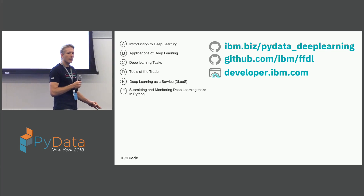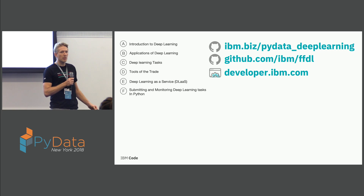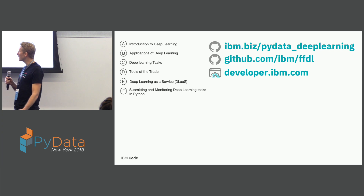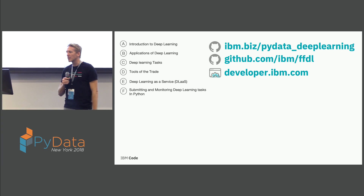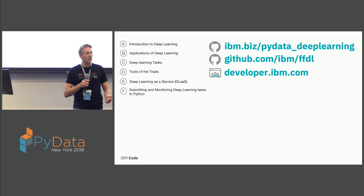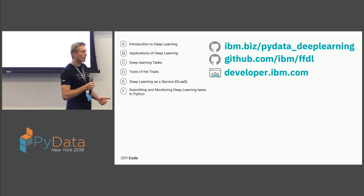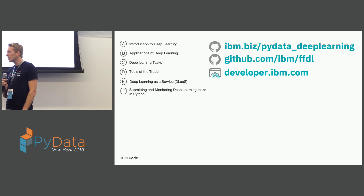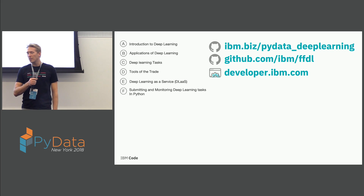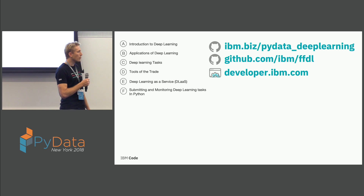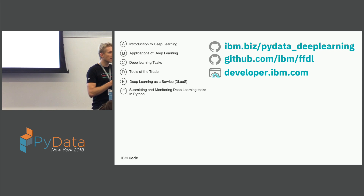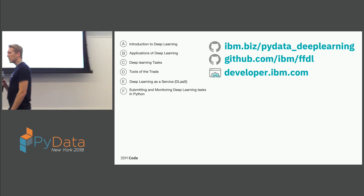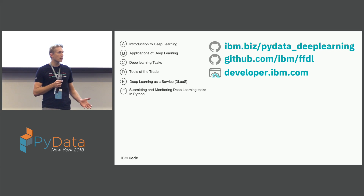If there are only three things you take away today, I want it to be these three URL links. The first is a GitHub project I'm going to walk through today using IBM's deep learning as a service to train, evaluate, and deploy a machine learning and deep learning model. The next is github.ibm.com/FFDL — Fiddle — the open source library and framework that IBM Watson's deep learning as a service is built on. And developer.ibm.com is where we share all of our GitHub projects and open source examples at IBM.